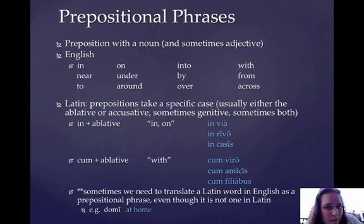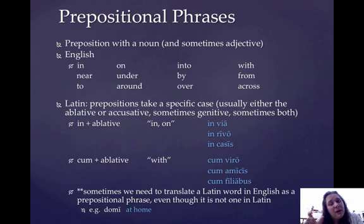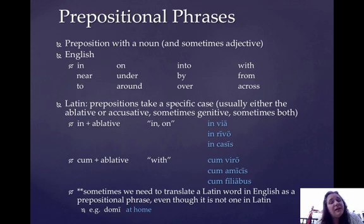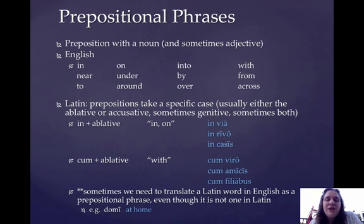The last thing we need to talk about today is prepositional phrases. A preposition with a noun — and sometimes that noun is described by an adjective — together is called a prepositional phrase: your preposition and its object. In English we have tons of prepositions, as they do in Latin too: in, on, into, with, near, under, by, from, to, around, over, across. In Latin, prepositions take a particular case — usually the ablative or the accusative. There are more prepositions that take the accusative than the ablative, but the most common prepositions tend to take the ablative.